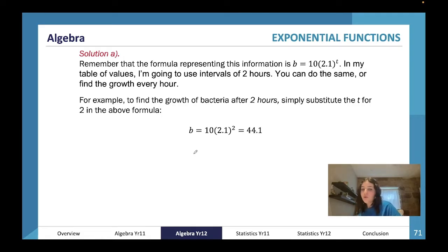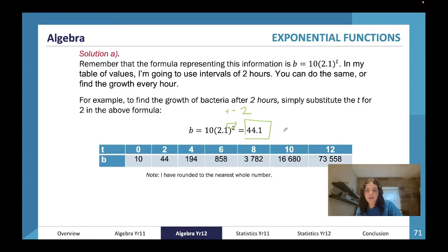Remember the formula is b = 10(2.1)^t. We're going to use intervals of 2 hours in our table of values. To find the growth after 2 hours, you just put 2 hours in, so after 2 hours there's 44.1 bacteria. We're going to do that for all of these periods of hours. For 6 hours, b = 10(2.1)^6, which equals 858.